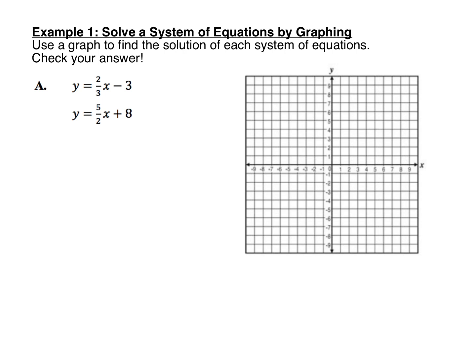Remember that when we graph a line in slope-intercept form — that's y equals mx plus b — the first thing we want to do is plot the y-intercept. The y-intercept is the b value, the point where the graph crosses the y-axis. After plotting the y-intercept, use the slope, the m value, to plot more points. The slope is the rise over run: the top number tells us how many to go up or down, the bottom tells us how many to move right. Positive numerator means go up, negative means go down; for run, we always go to the right.